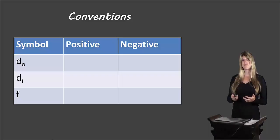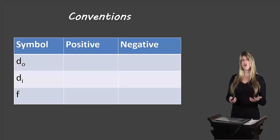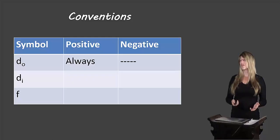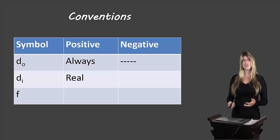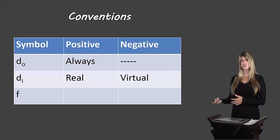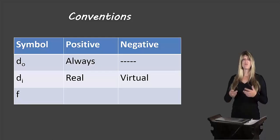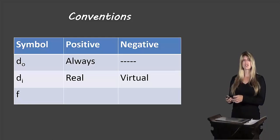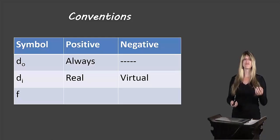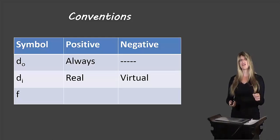Let's look at the conventions for describing our images. DO will always be positive — it's impossible to have a negative object distance. The image distance, DI, can be positive or negative: if it is a real image we give it a positive value, and if it's a virtual image we give it a negative value. You can't measure a negative distance with a ruler — this is just a convention. So if the image distance is 5 cm but it's a virtual image, we call it negative 5 cm to indicate that it is a virtual image.